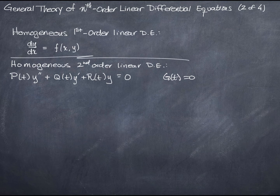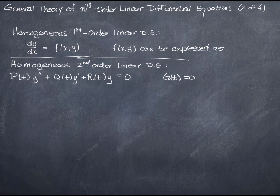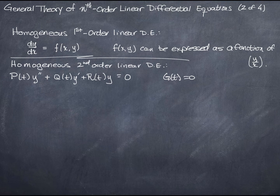We said that in that case, an equation of this form — dy/dx or y prime equals some function containing both x and y — if that function on the right-hand side can be expressed as a function of the ratio y over x, then we call it a homogeneous equation. The difference between these two is that this is a specific definition for first-order linear differential equations, and I didn't emphasize it at the time because I knew it would be confusing.